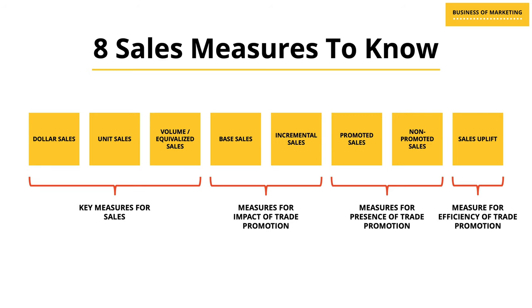To conclude, I have put together all eight terms in one sheet — if you remember this one sheet you will never be confused again. The measures are: dollar sales, unit sales, and volume or equalized sales for overall sales; base sales and incremental sales to understand the impact of trade promotion; promoted and non-promoted sales to understand the presence of activity; and finally, sales uplift as an indicator of the efficiency of trade promotion.